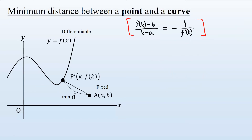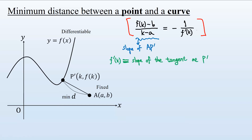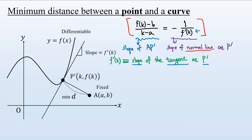What does this relation mean? The left-hand side is the slope of the line AP'. The derivative f'(k) is the slope of the tangent at point P'. Since when two lines are perpendicular their slopes multiply to minus 1, minus 1 over f'(k) is the slope of the line perpendicular to the tangent — the normal line at P'. Therefore, line AP' must be the normal line to the curve at P'.